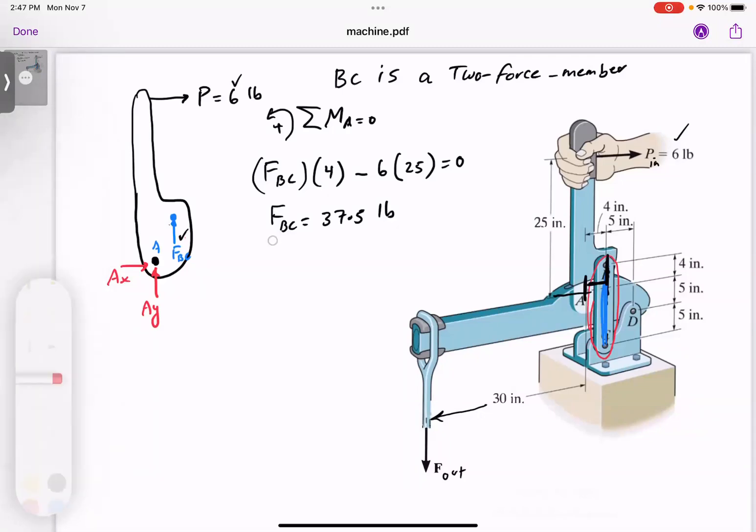Now go ahead and find Ax and Ay. By balancing forces in the x direction, Ax should switch direction and be equal to the applied load six pounds to the left. Similarly by balancing forces in the y direction, Ay has to also switch direction and be equal to 37 and a half pointing up, also in pounds.